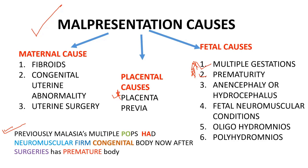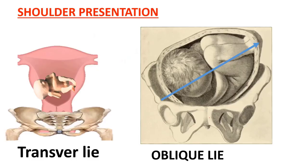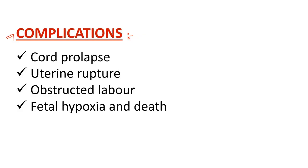The specific complications of shoulder presentation are cord prolapse and hand or arm prolapse. Because the head is not the presenting part, when membranes rupture, the cord and arm can prolapse easily. For any malpresentation, always write these four complications: cord prolapse, uterine rupture, obstructed labor, and fetal hypoxia and death. In shoulder presentation, cord prolapse and arm prolapse are the most commonly associated.